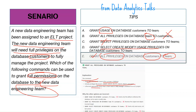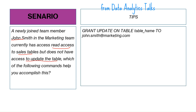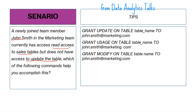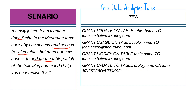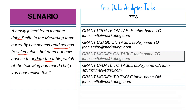Scenario four: a newly joined team member, John Smith on the marketing team, has read access to the sales table but does not have access to update it. The options include GRANT UPDATE, GRANT USAGE, and GRANT MODIFY on the table. The correct answer is: GRANT MODIFY ON TABLE table_name TO john_smith, as MODIFY grants the necessary update access.